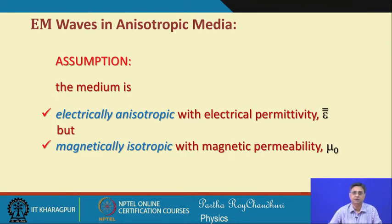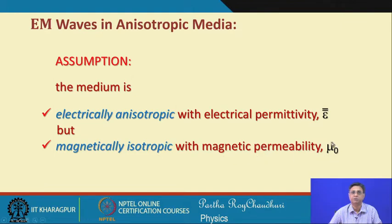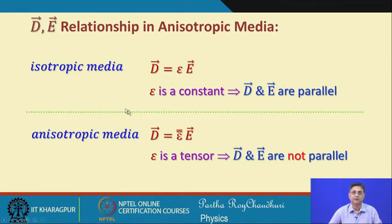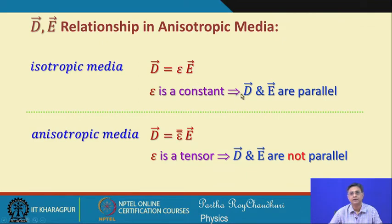In a general anisotropic medium we assume the medium is electrically anisotropic with electrical permittivity given by epsilon-bar, which is a tensor. But the medium is magnetically isotropic with magnetic permeability mu-naught, the free space permeability. The constitutive relation is D = ε·E; for isotropic medium epsilon is a scalar constant.